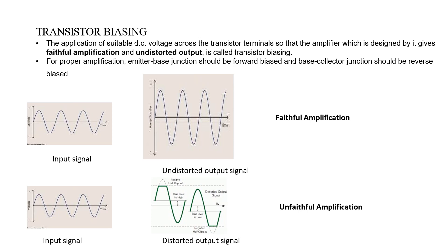In reverse biasing, the p-terminal is connected to the negative terminal of the battery and the n-terminal is connected to the positive terminal. This is the reverse biasing of p-n junction. In case of a simple p-n junction diode, biasing means simply connecting the battery across the p-n junction; other circuit elements are not included.